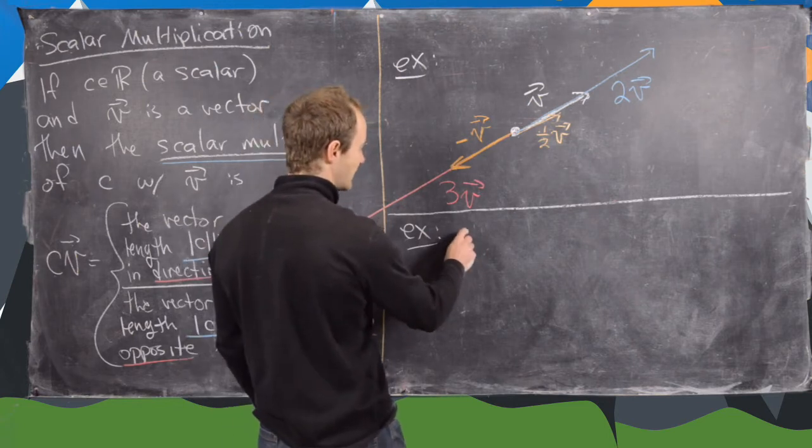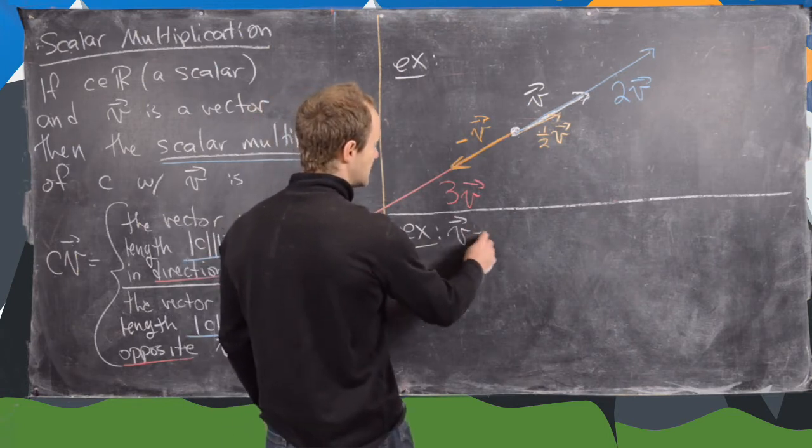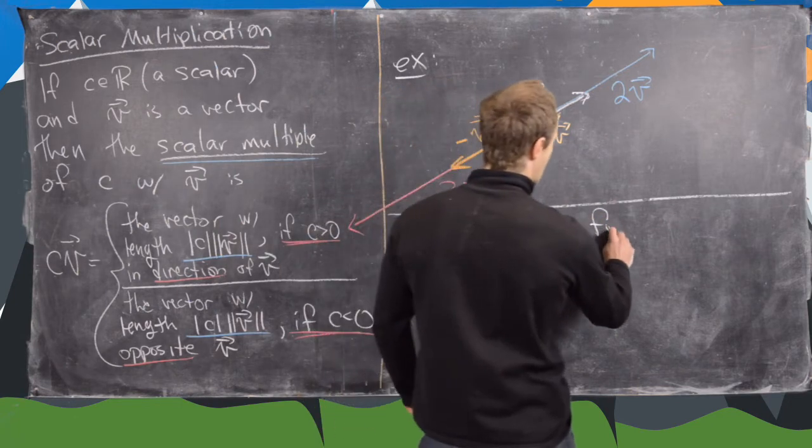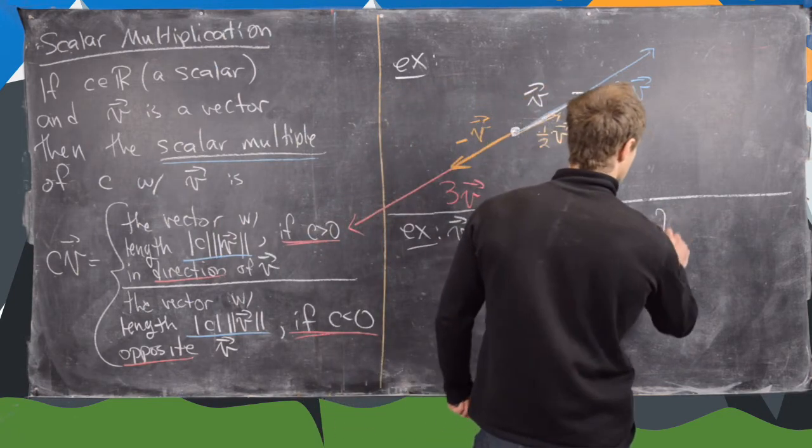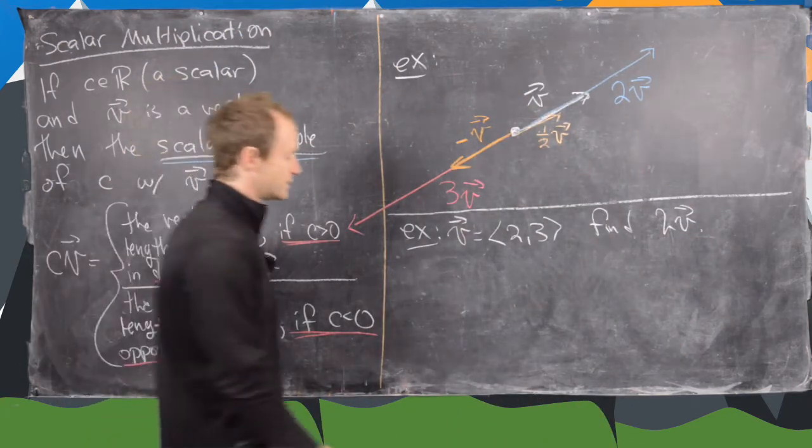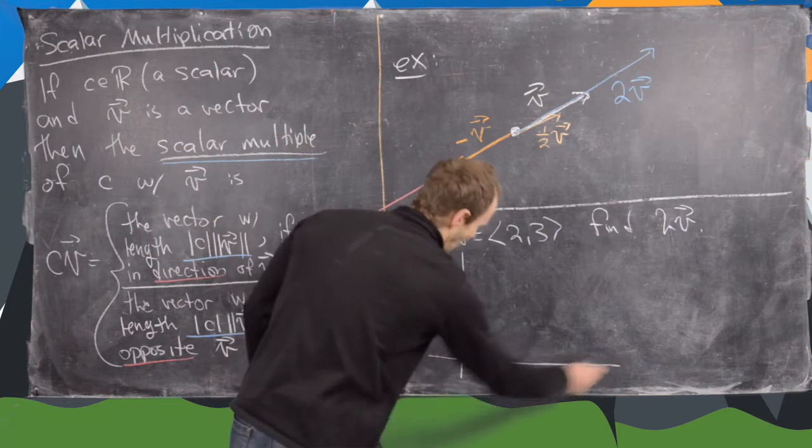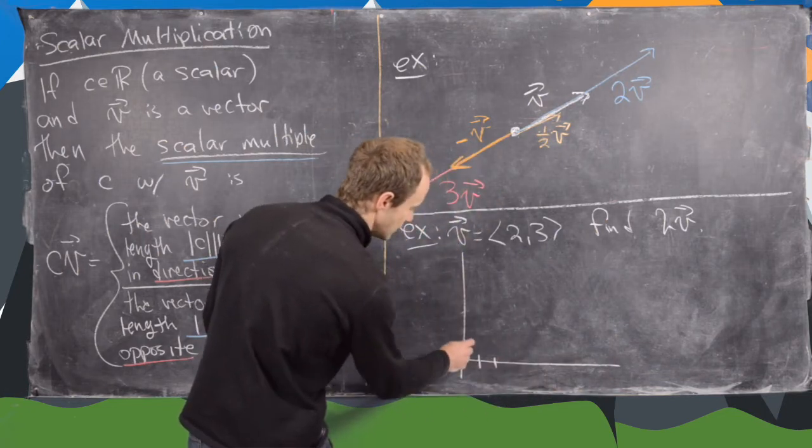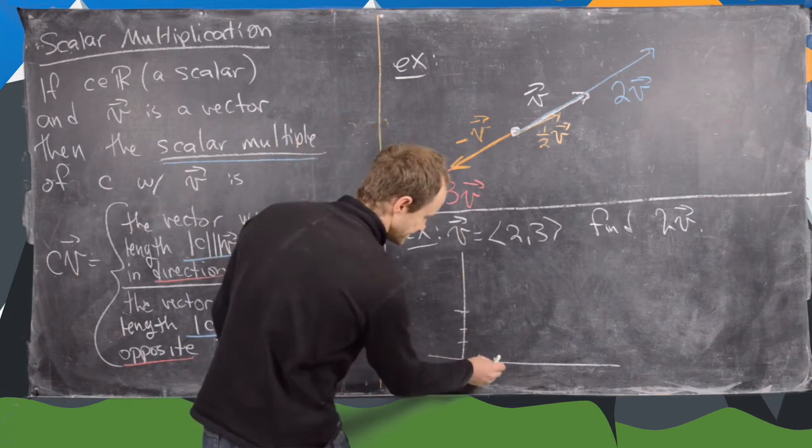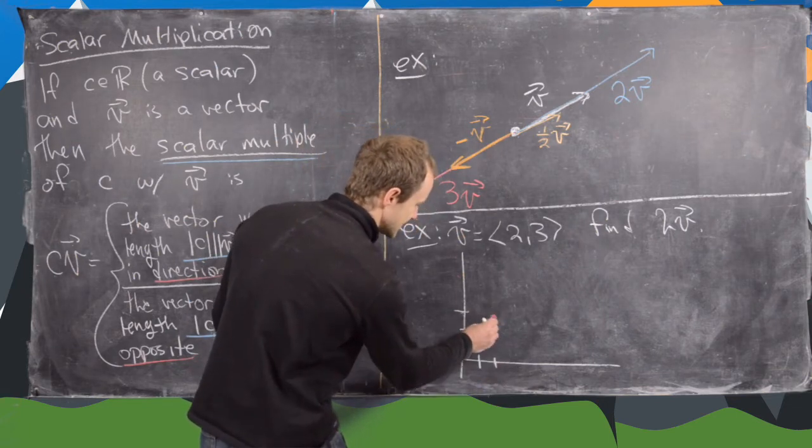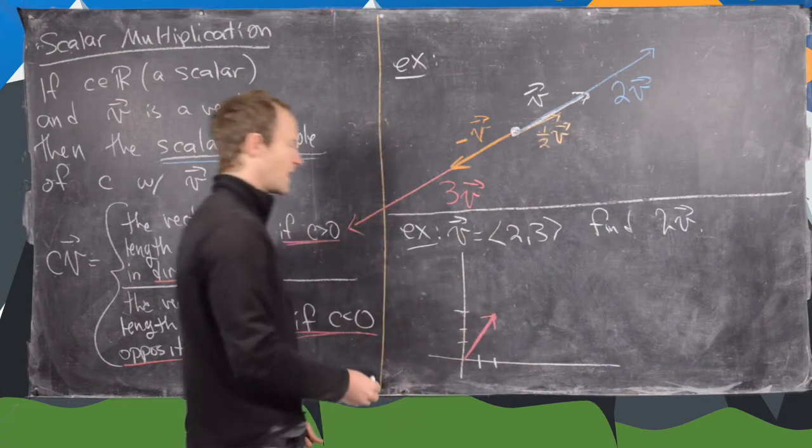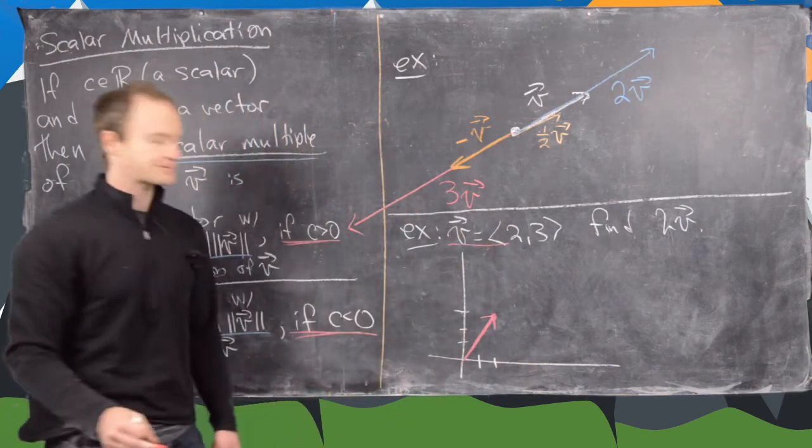So let's say we have v equals (2, 3). And let's find 2v. So notice we can graph v as follows. So that's going to be 1, 2, 1, 2, 3. So v will be the vector up to this terminal point if we take the initial point to be the origin. So there's our vector v.